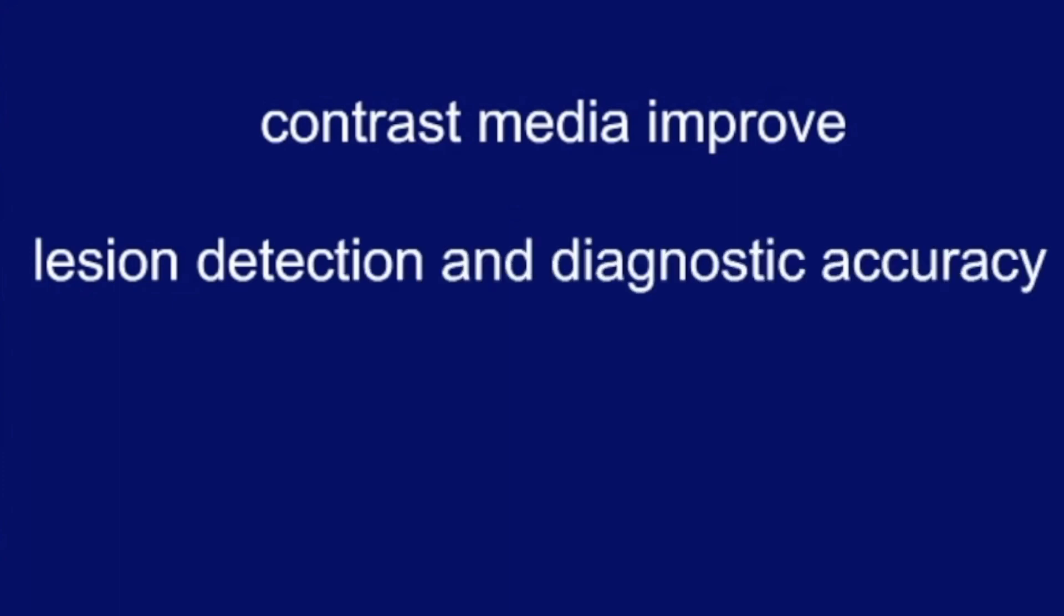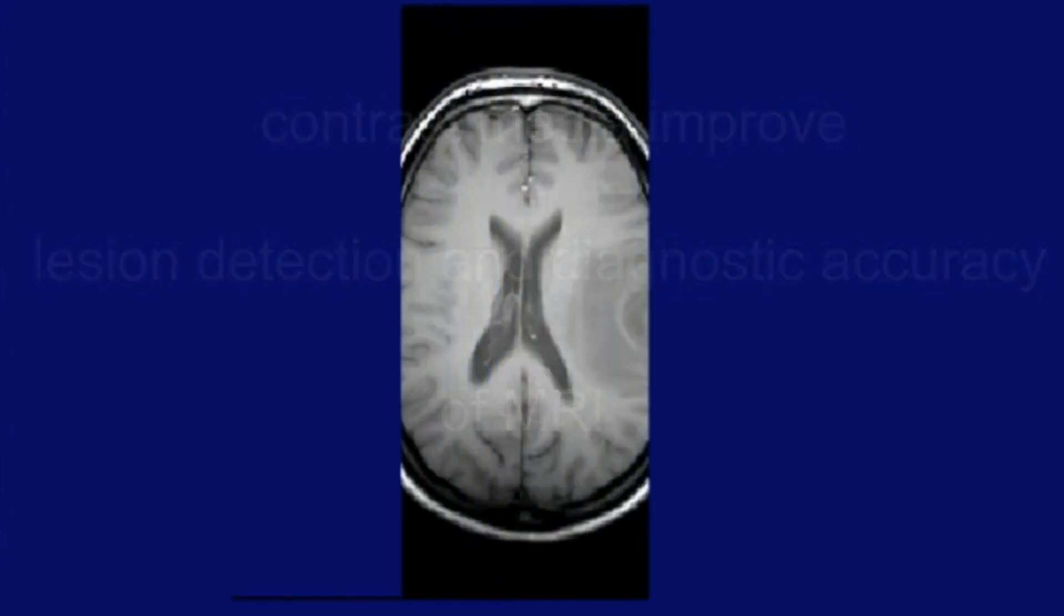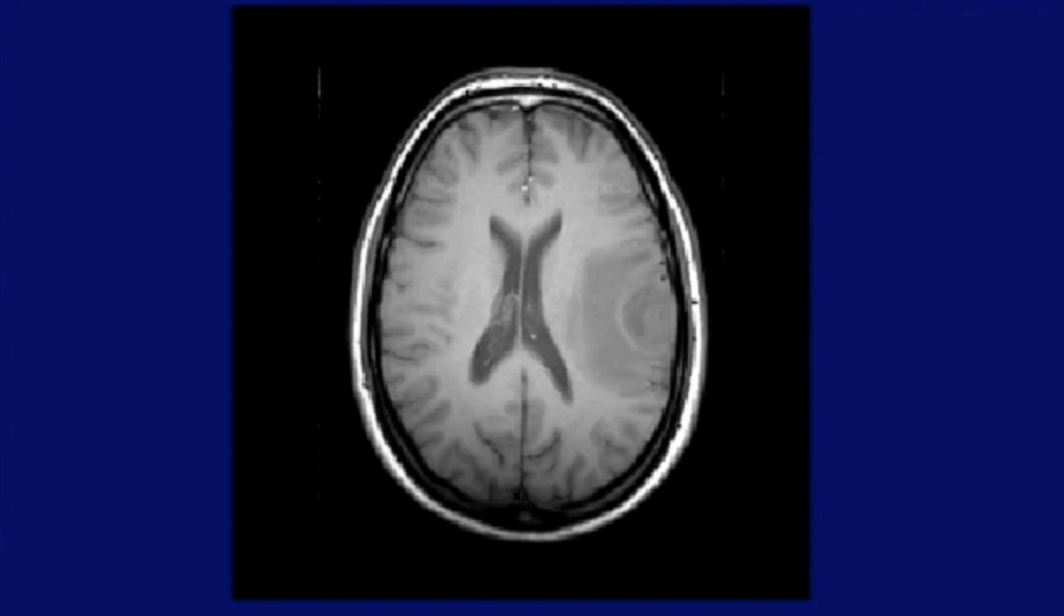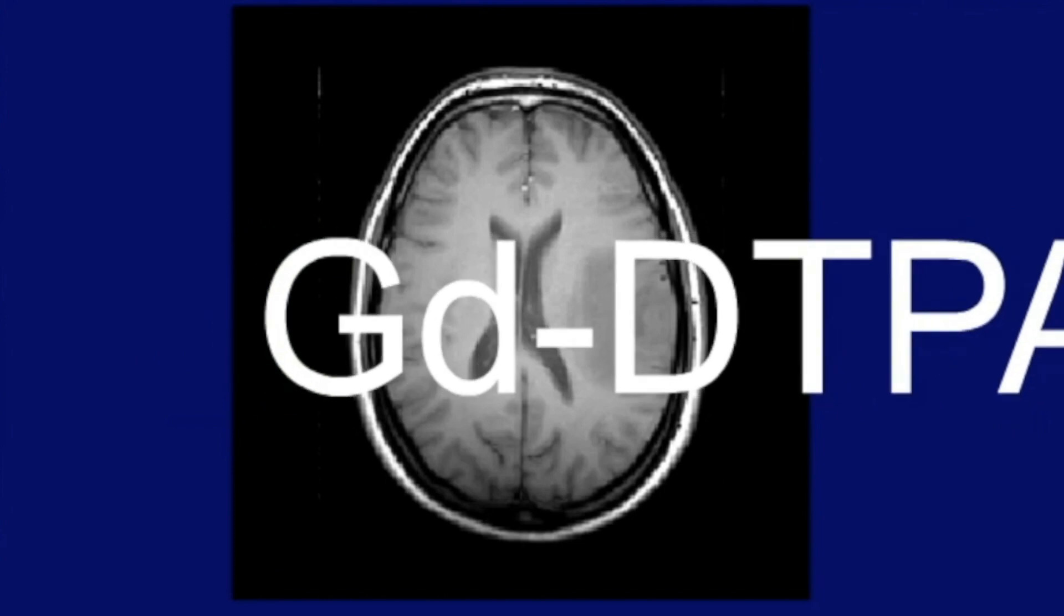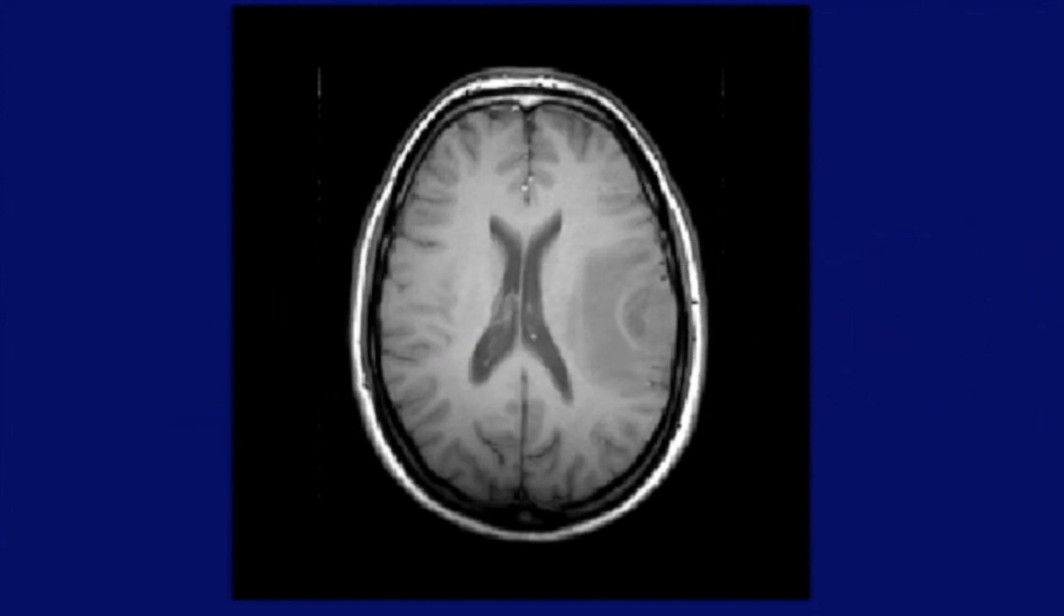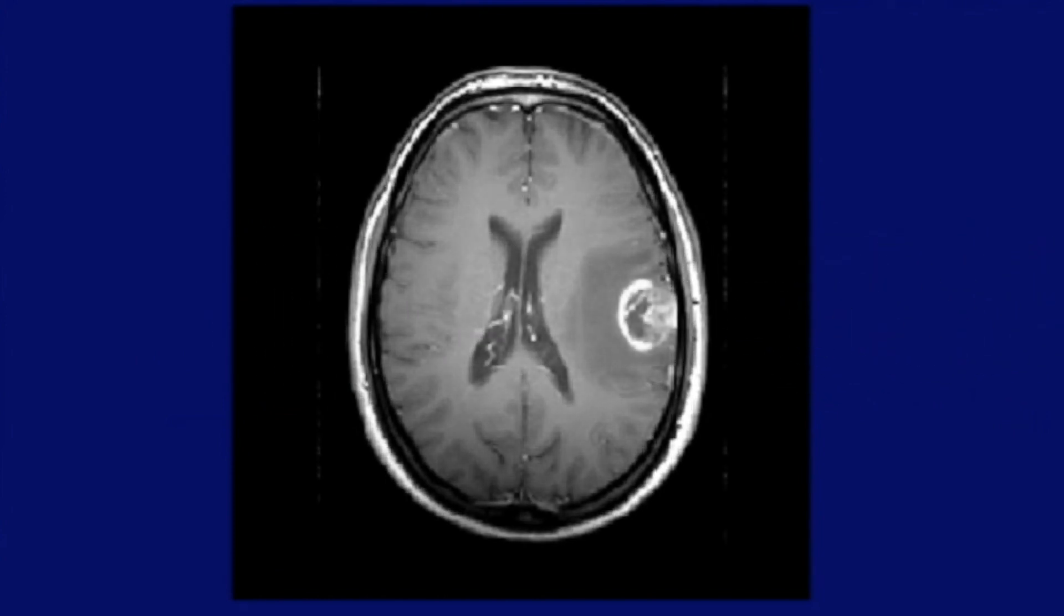It has been shown that the use of contrast media improved lesion detection and diagnostic accuracy of MRI. It may, for example, help with differentiation between tumour tissue and surrounding edema, which might be otherwise indistinguishable. Gadolinium-DTPA entering into the tumour tissue shortens the T1, thus making the tumour bright in a T1 weighted image, while the surrounding edema may not be influenced at all.